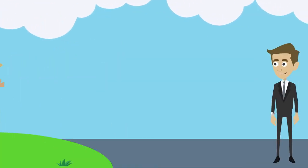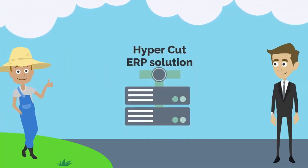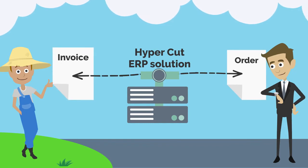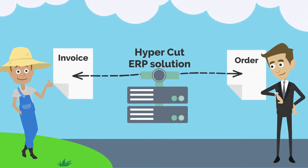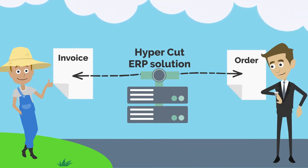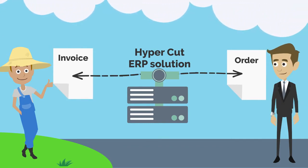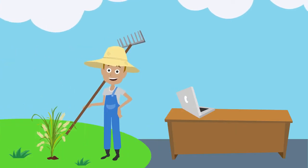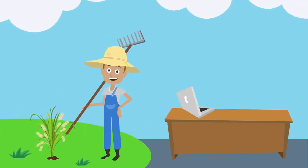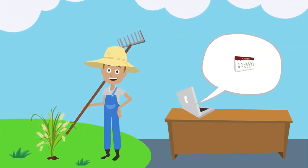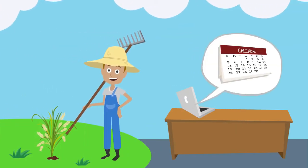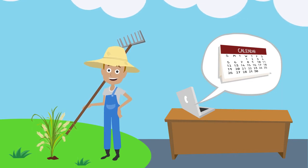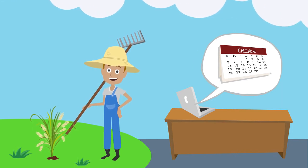Once purchased, Store Connect sends all the details to the HyperCut back-end system so the warehouse can deliver the product and provide Harold with the shipping info. Salesforce's Marketing Cloud automatically creates a message for Harold in three months to notify him that his oil filter needs replacing.